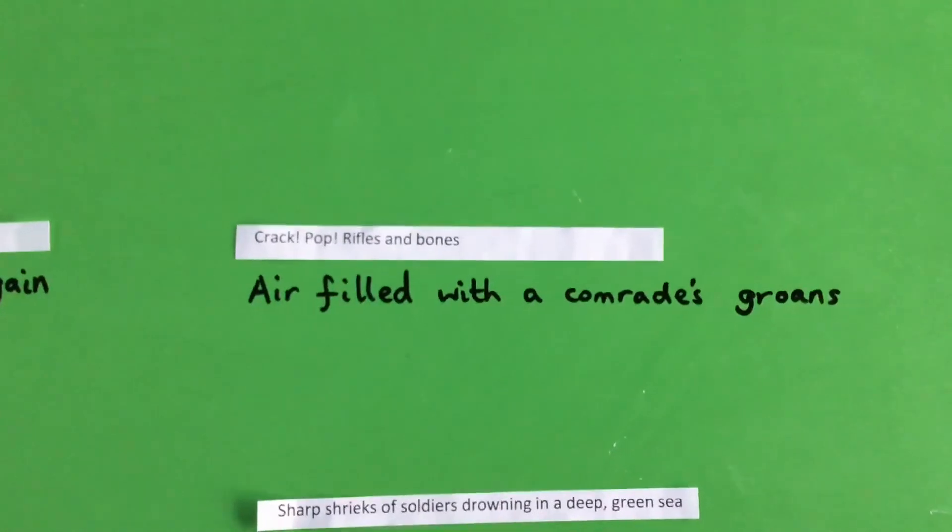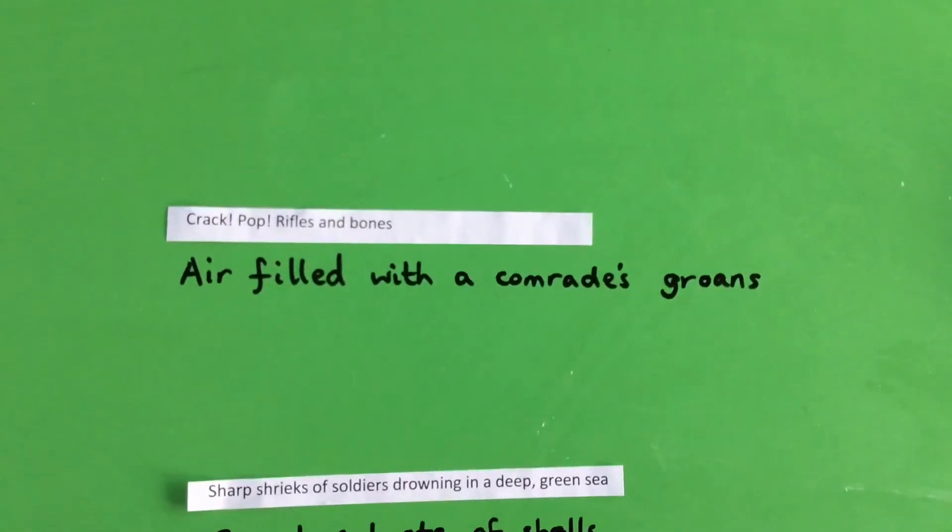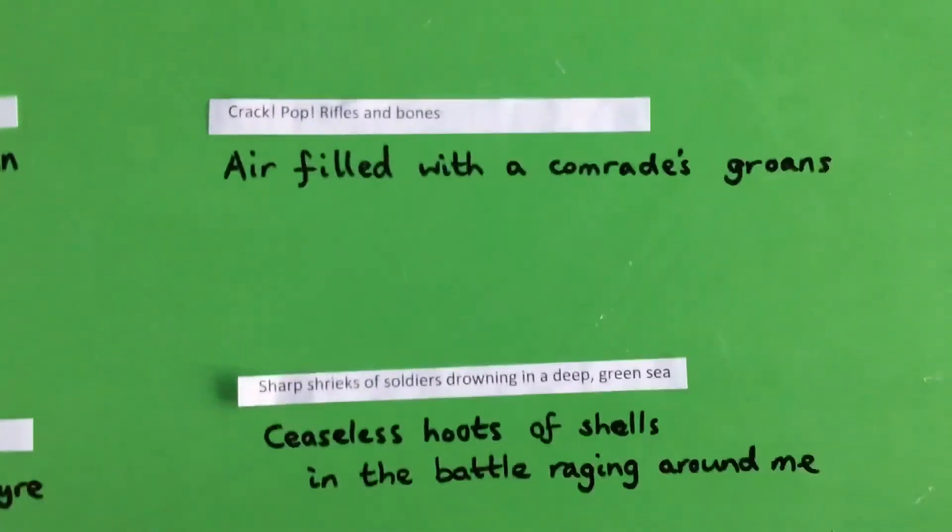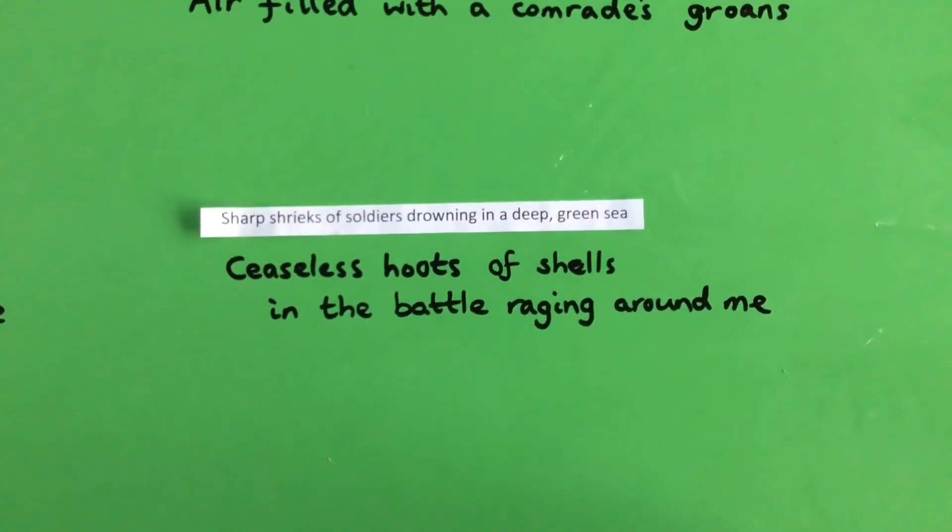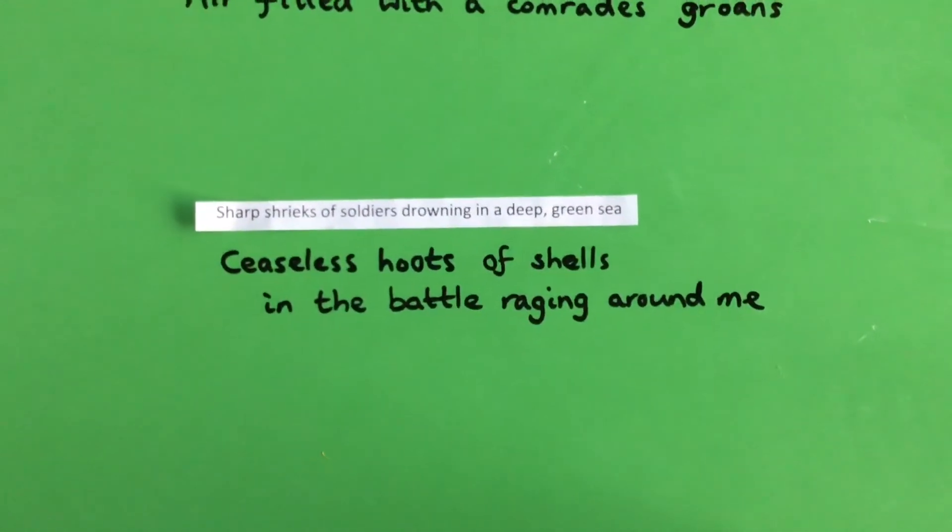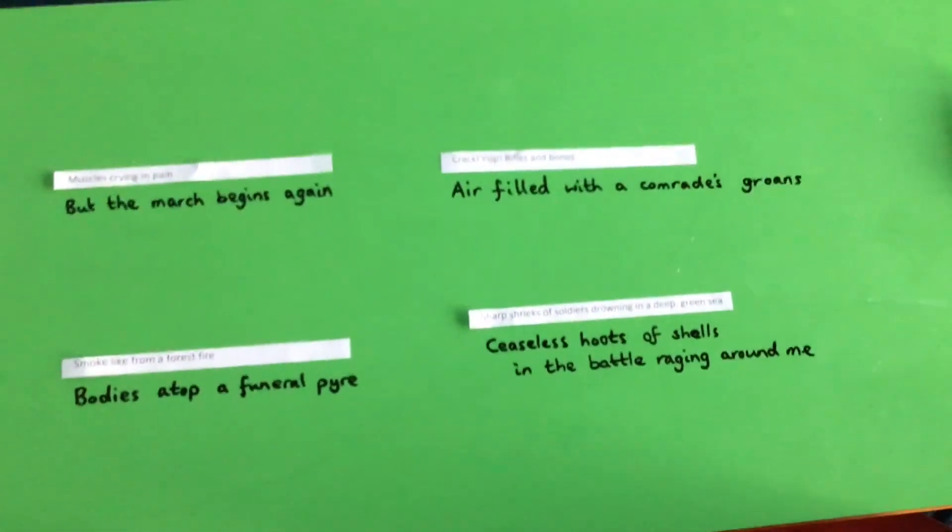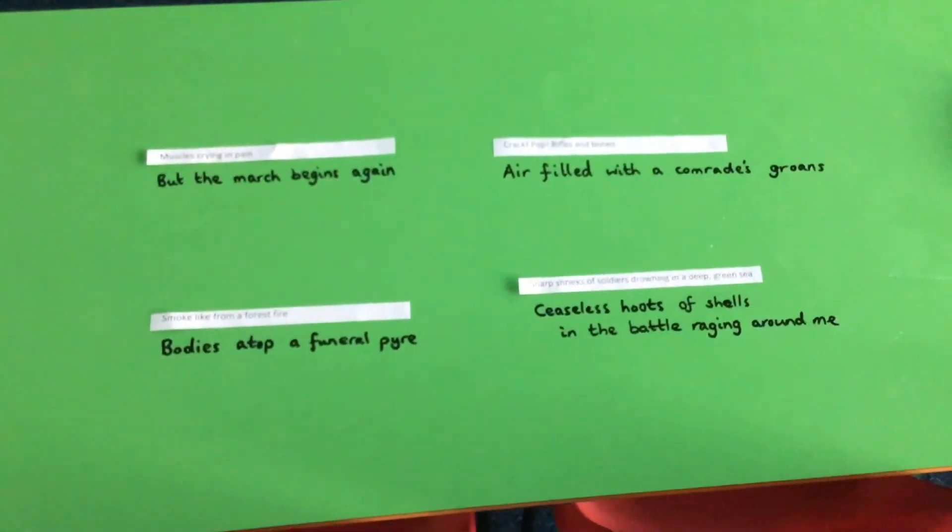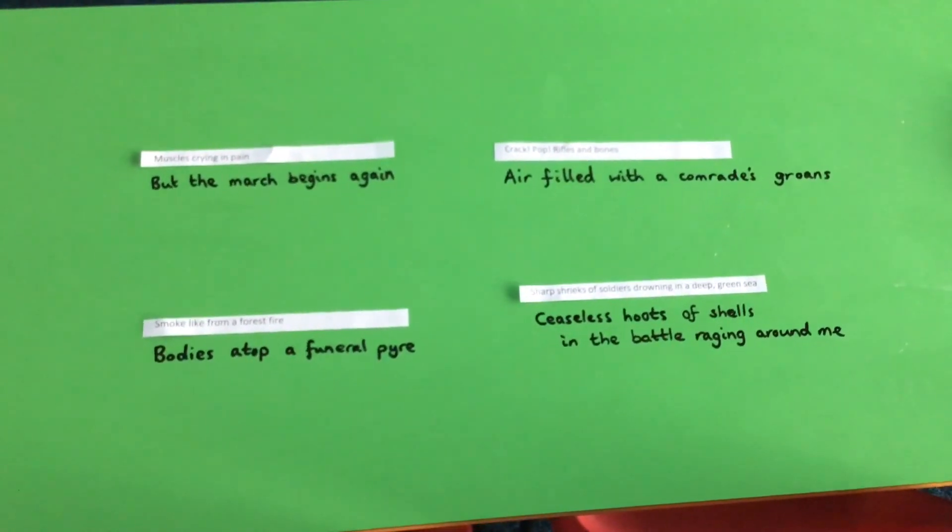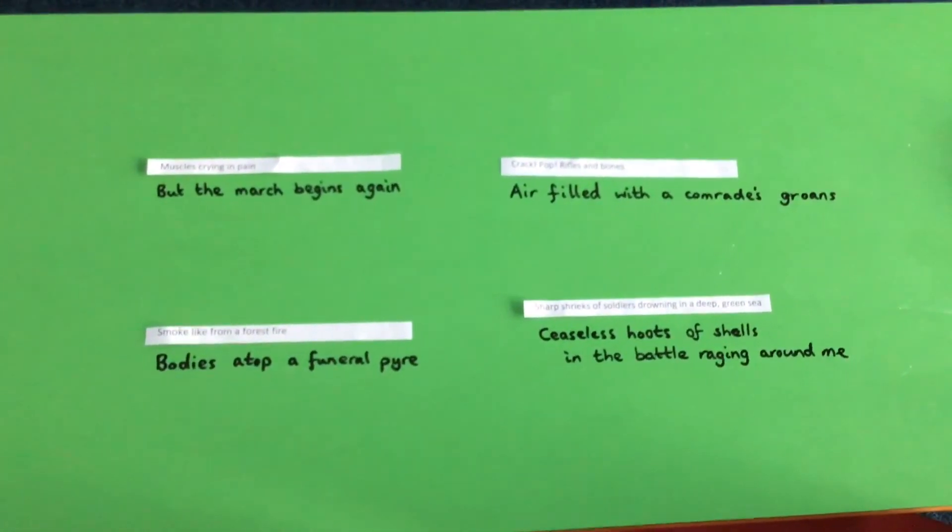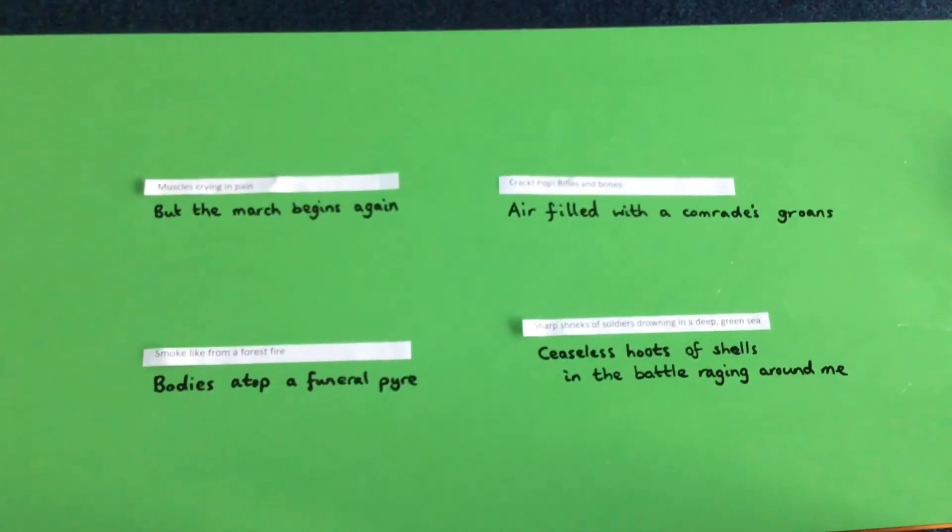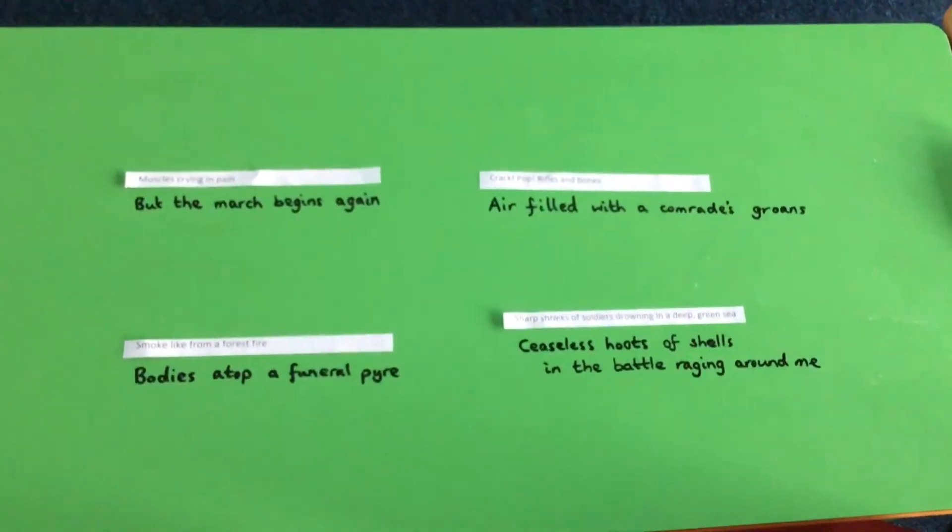Crack, pop, rifles and bones, air filled with a comrade's groans. Comrade being a fellow soldier. And this last one, sharp shrieks of soldiers drowning in a deep green sea. Ceaseless hoots of shells in the battle raging around me. Okay so all these ideas taken from the poems that we've looked at over the course of the week. That's the beauty of having things to look through and find good examples of. Because you're a magpie, some great ideas. So see if you can come up with your own rhyming couplets based on some of the lines that we've used in the last few lessons.